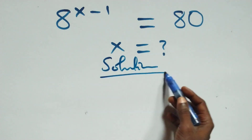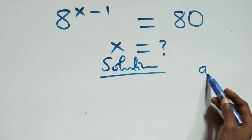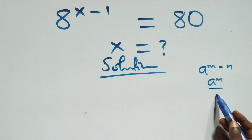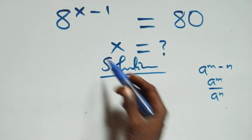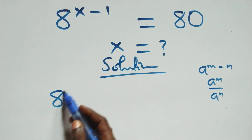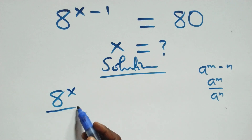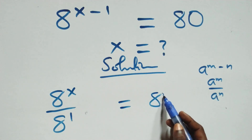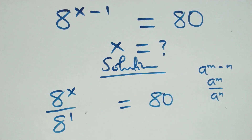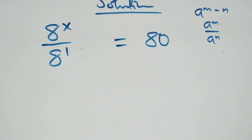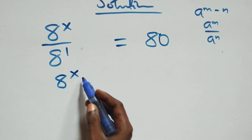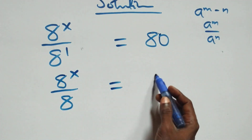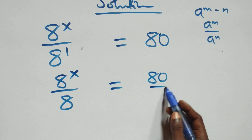What we have here is: a raised to power h minus n equals a raised to power h over a raised to power n. In our specific case, we have 8 raised to power x over 8 raised to power 1, equals 80 on this side. This is the same as 8 raised to power x over 8, which we can write as 80 over 1.